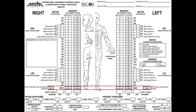Starting with this one here, let's fill the bottom row. First, the sensory level on the right is going to be T1. The sensory level on the left is going to be C8.